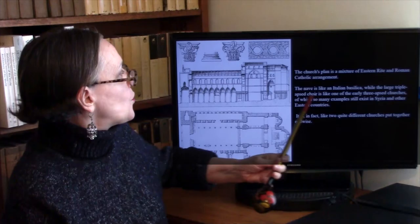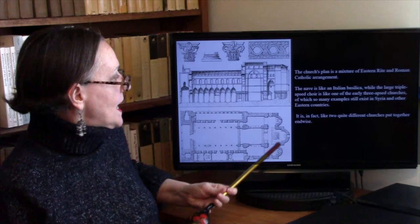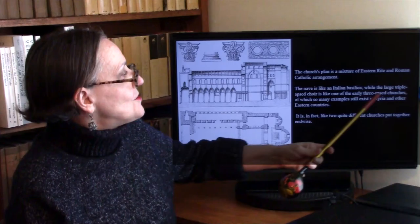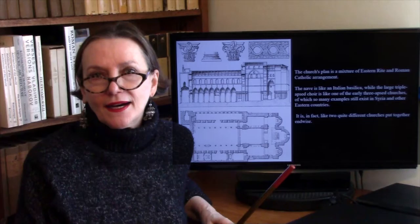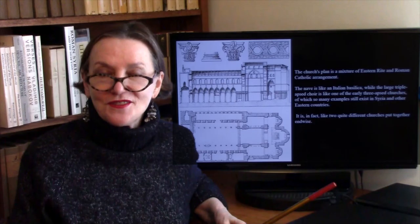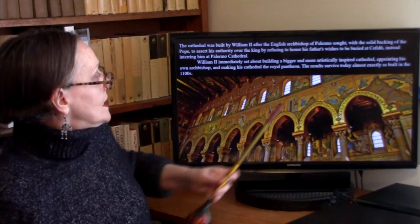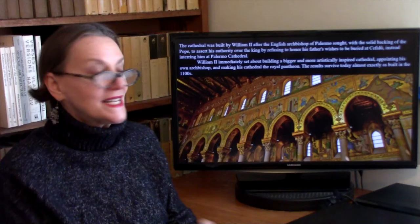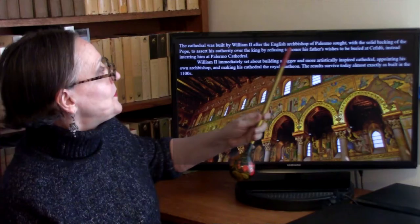The nave is like an Italian basilica, while the large triple-apse choir has three apses — a main apse and one on each side, like the early three-apse churches of which so many examples still exist in Syria and other Eastern churches. It is like two quite different churches put together end-wise, but it works extremely well, and the interior is covered with the most spectacular mosaics done by Byzantine artists.